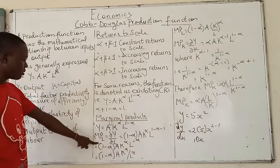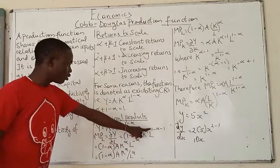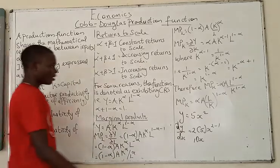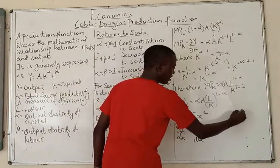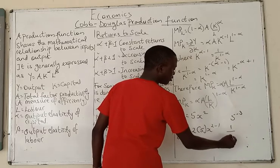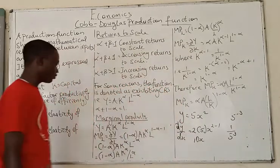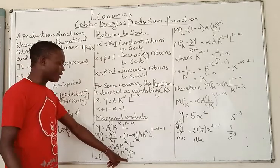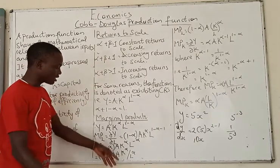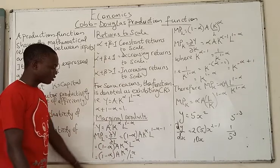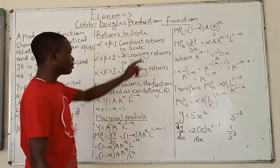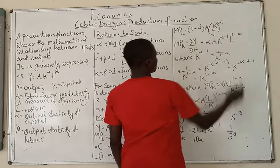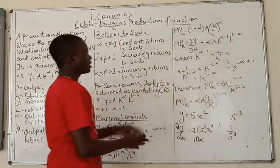That gives us 1 minus alpha, A, K^α, then L raised by negative alpha. Recall from mathematics that if you have 5 raised by minus 3, that is simply 1 over 5 raised by 3. So L raised by minus alpha becomes 1 over L^α. Bringing K^α and L^α together, L^α becomes the denominator. So the marginal product of labor is written as: (1−α)·A·(K/L)^α, where K over L is in the bracket and alpha is the exponent outside.